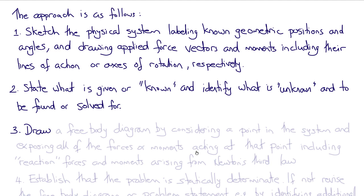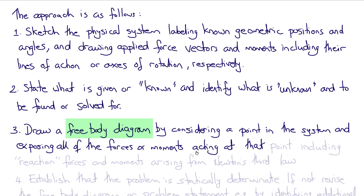The third step is to draw a free body diagram by considering a point in the system and exposing all of the forces or moments acting at that point, including any reaction forces and moments arising from Newton's third law. And so sometimes this involves making an imaginary cut in structures or members to expose conceptually that reaction force.